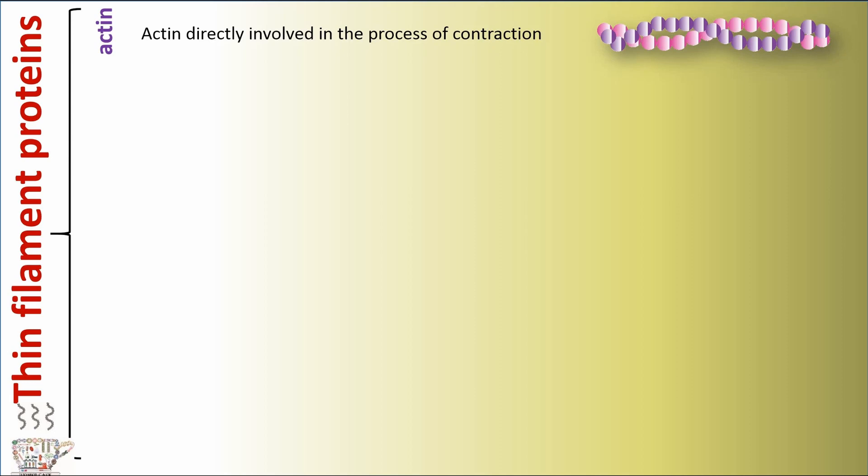Thin filament proteins. Thin filaments have three proteins. The first protein is actin. Actin directly involves in the process of contraction. There is a video about actin filaments in Biomed Cafe channel that you can watch.